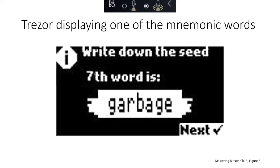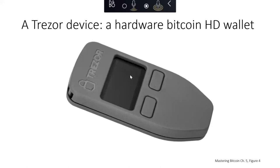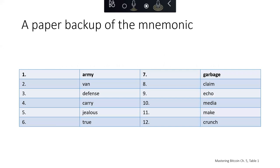Here's an example of what the screen looks like on that Trezor physical device when it's displaying a mnemonic word. It would say 'write down the seed' and show a word — for example, the seventh word is 'garbage' — and then you press next to see the next word. Here's what a paper backup of that 12-word mnemonic would look like: the first word was 'army', then 'ban', 'defense', 'carry', 'jealous', 'true', 'garbage', 'claim', 'echo', 'media', 'make', and 'crunch'. There is a standard for how these words are generated — a list of several thousand words, none very similar to each other. It's also important to have these words in order with a numeric listing, because having 'ban' before 'army' would be a different wallet than 'army' before 'ban'.